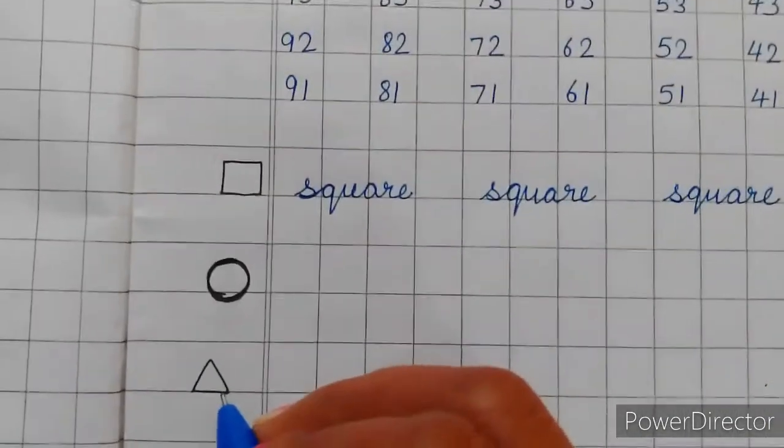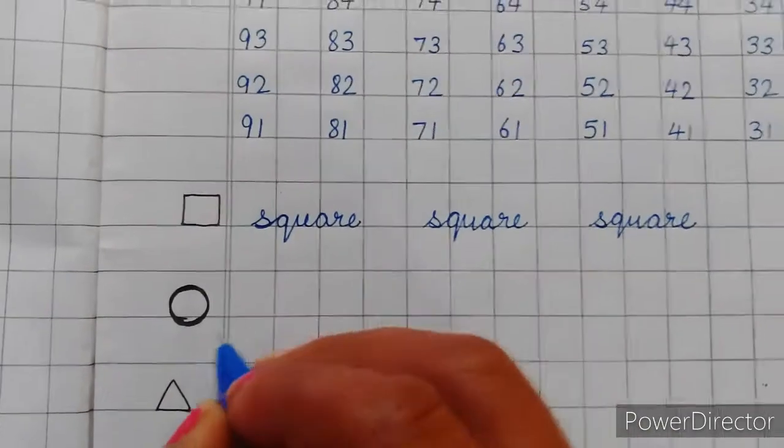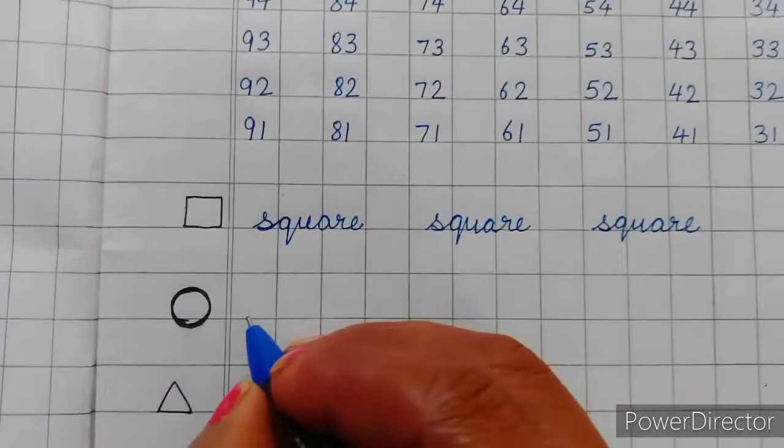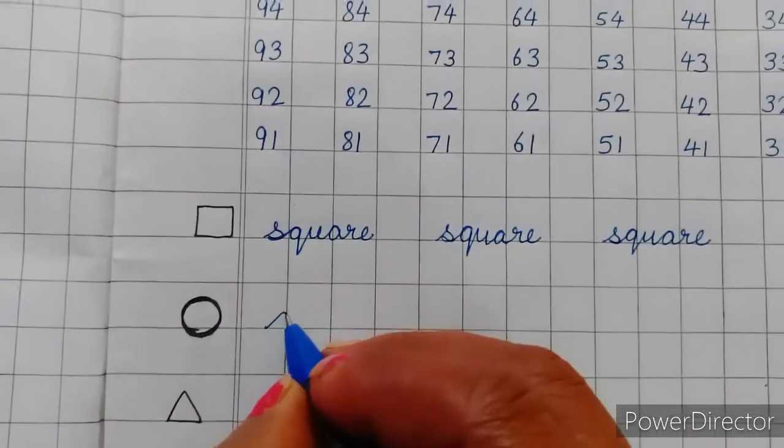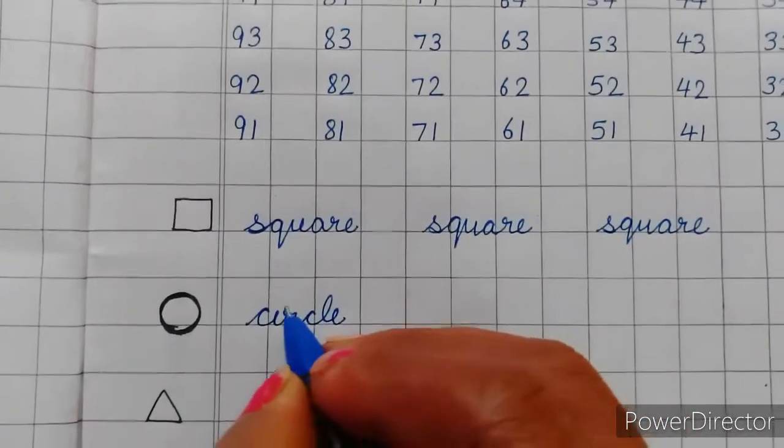Now, these two spelling are new. So, today we will learn also. These shapes spelling. This is circle. C, I, R, C, L, E, circle.